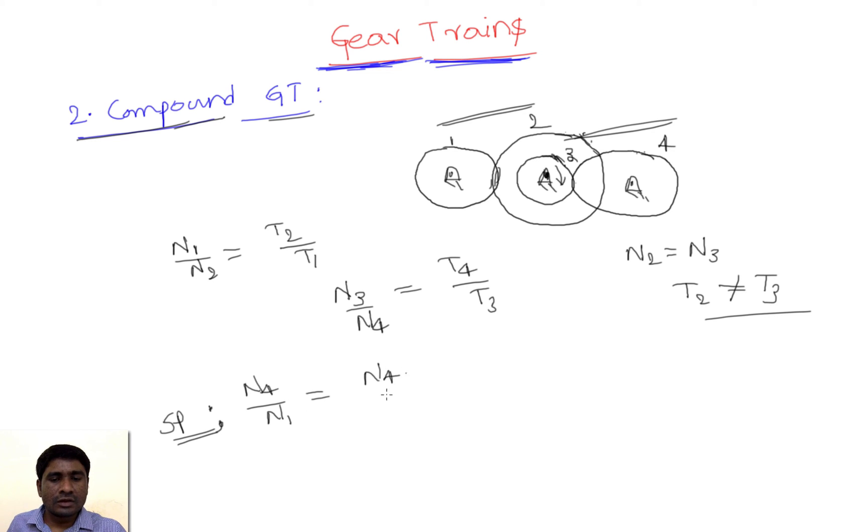This can be obtained by multiplying: N2/N1 times N4/N3. From the first equation we can write T1/T2, and from the second we can write T3/T4.